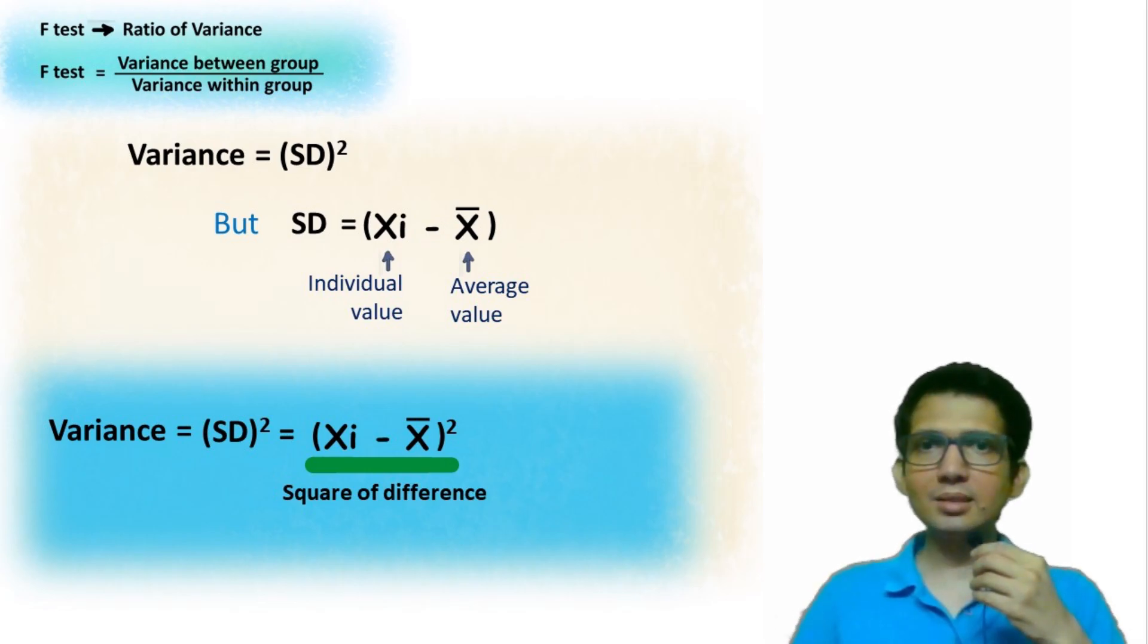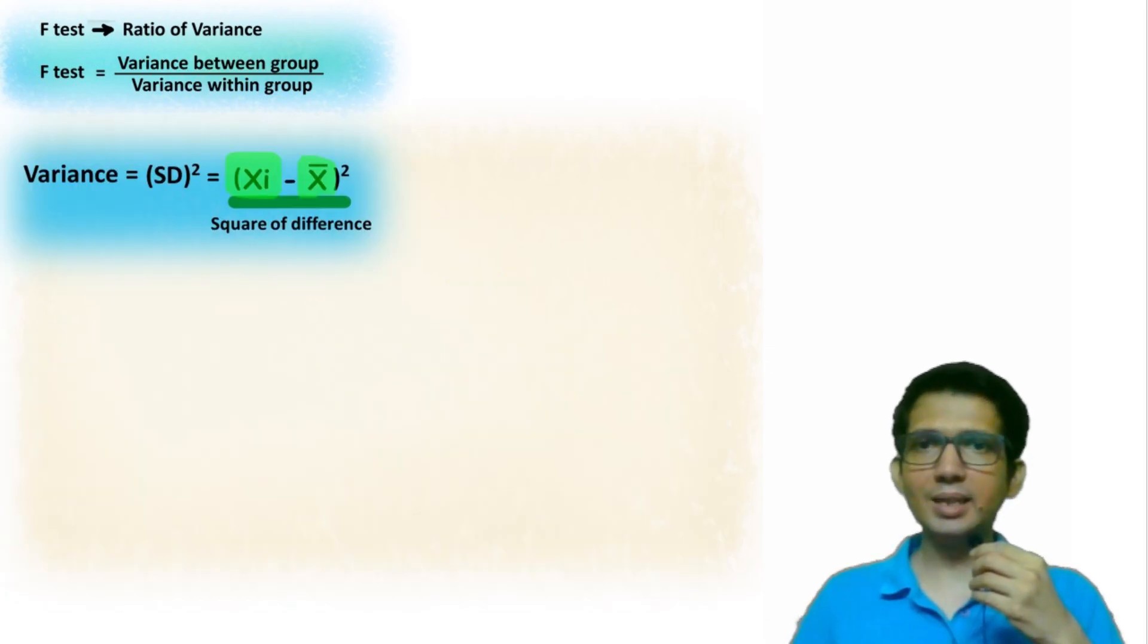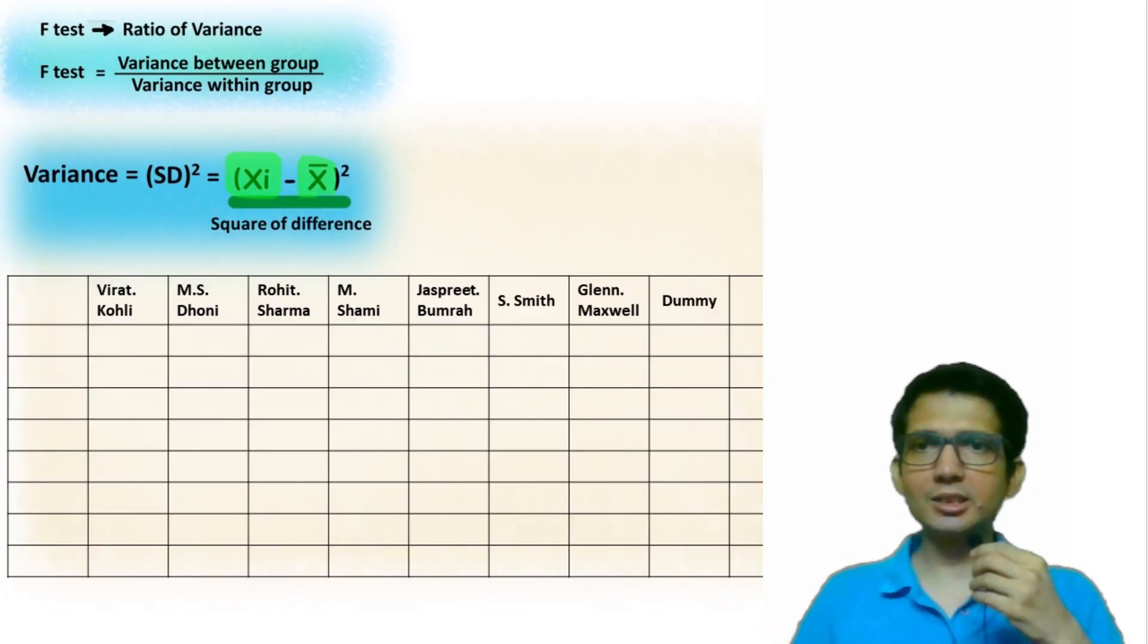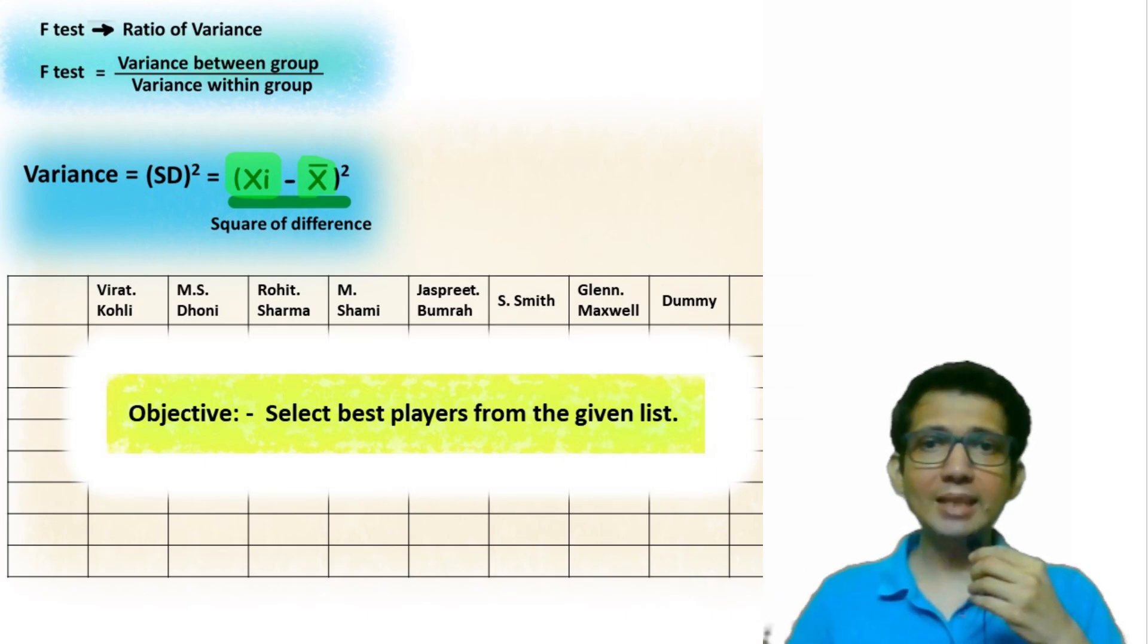Based on these basics, let's try to understand what Placket Barman Analysis is using a simple example of cricket. Let's say you want to make your own cricket team. Your objective will be to select the best players from the given list.